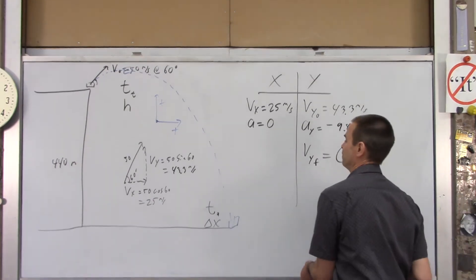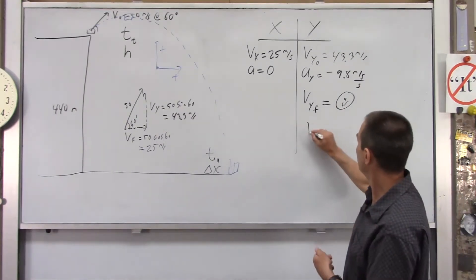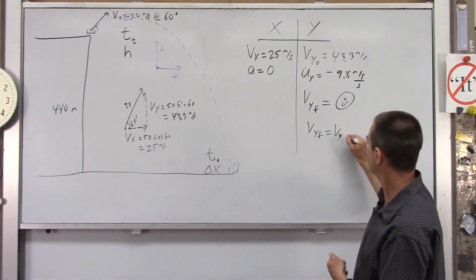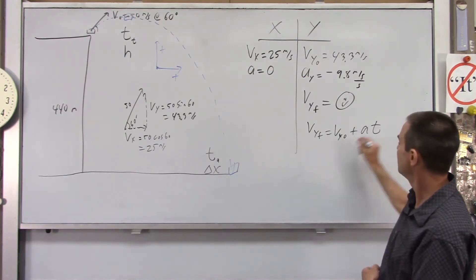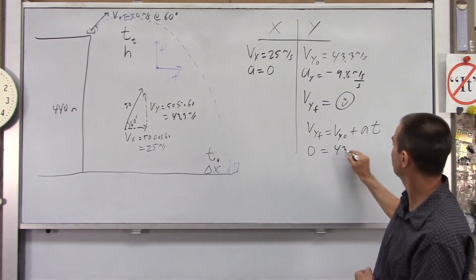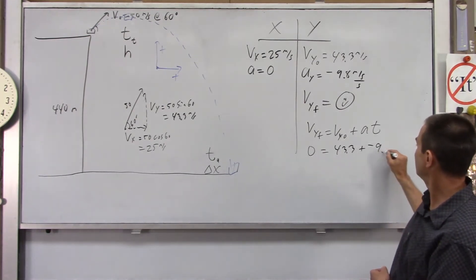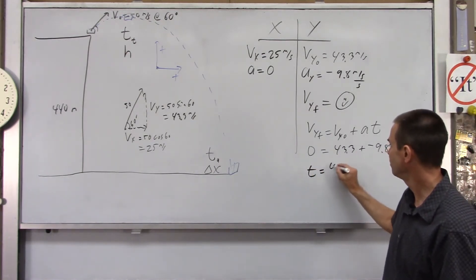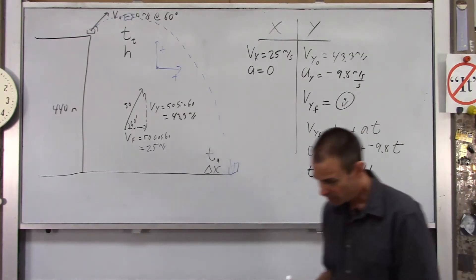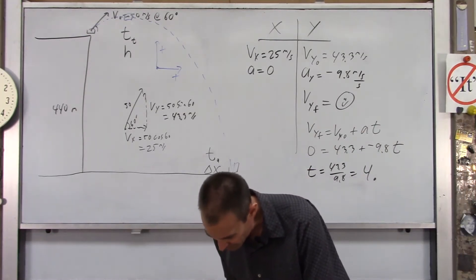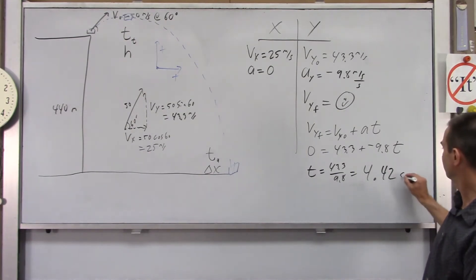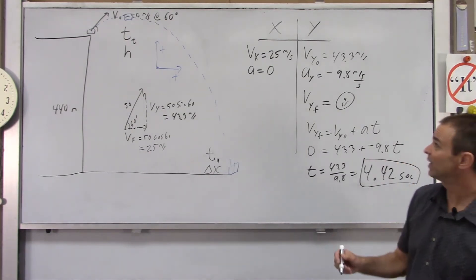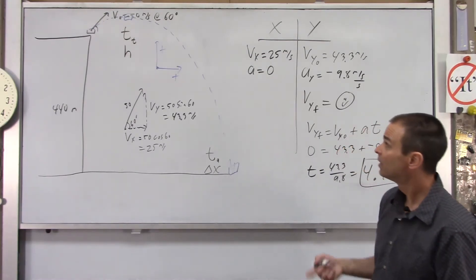To find the time to get to the top, we'll use VY final equals VY naught plus AT. We know that's zero. We know this is 43.3. We know A is negative 9.8 T. If you move this over to here, it becomes positive 9.8 T. Then you divide by 9.8. So T is going to be 43.3 divided by 9.8, which should be a little over 4 seconds. When you do that in the calculator, I got 4.42 seconds. So that's how long it's in the air. So we've answered one of our four questions.